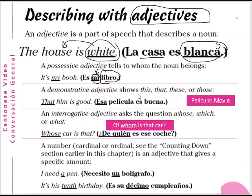A demonstrative adjective: this, that, these, or those. The adjective esa means 'that'. For example, 'that film is good' — esa película es buena. Película is a feminine noun, so esa is the feminine form of the adjective. Buena means good and must also agree with película, so bueno becomes buena. Adjectives must agree with the gender of the noun — esa película es buena, that film is good.